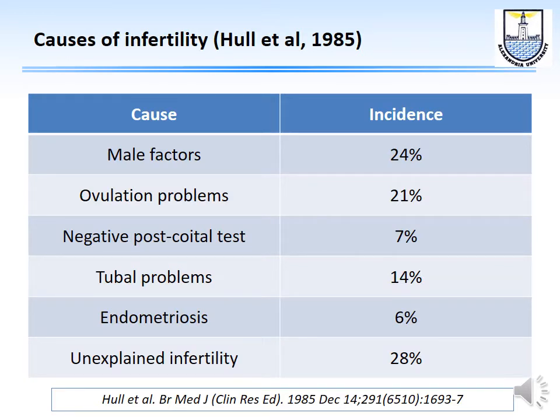These are the causes of infertility according to the study by Michael Hull, published in 1983 — figures which still stand today. Hull found that 24% had male factor problems, 21% had ovulatory problems, 7% had a negative post-coital test indicating cervical factor issues, 14% had tubal problems, 6% had endometriosis as the peritoneal factor, and about 28% were labeled as unexplained infertility.